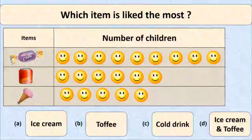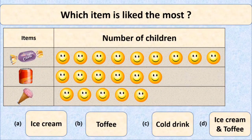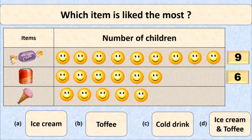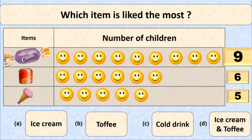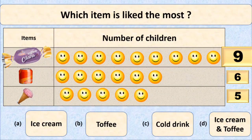Let's find out the item which is liked the most. We will count the number of persons from the given table. Nine children like toffee, six of them like cold drink, and ice cream is liked by five. The largest number here is nine, so toffee is the item that is liked the most. Option B is the right option and we will put a tick mark there.